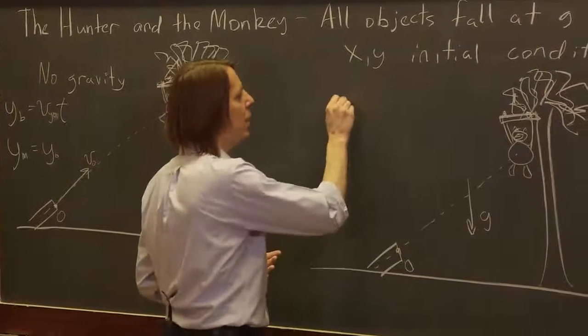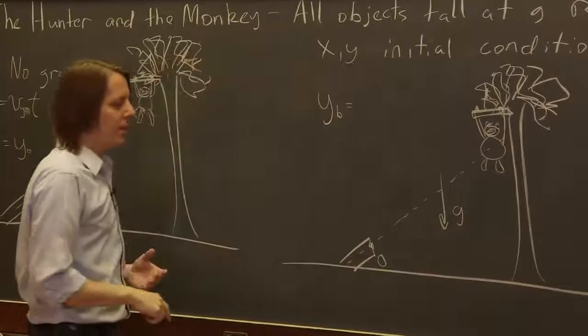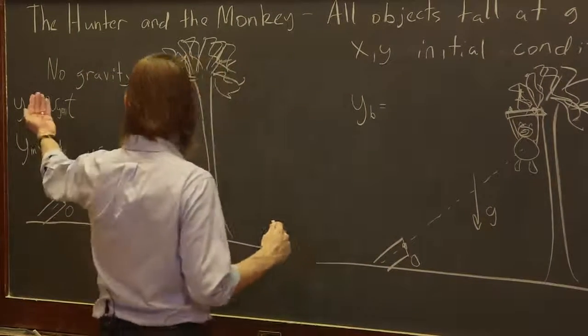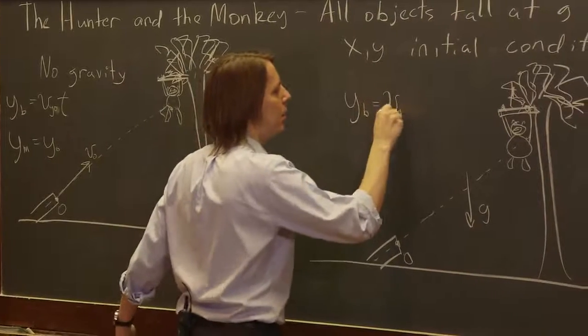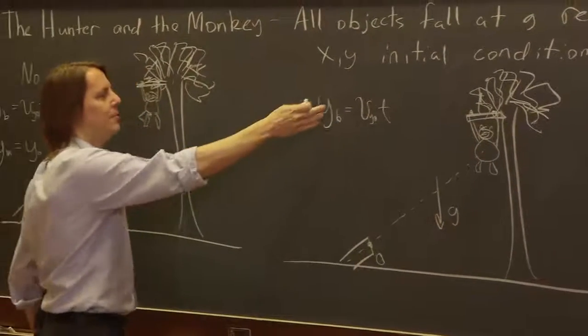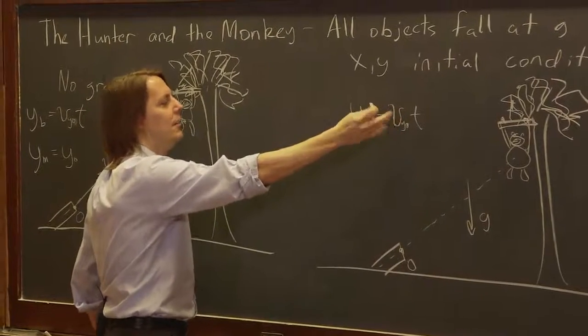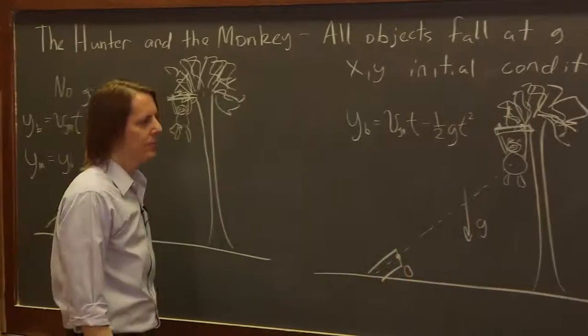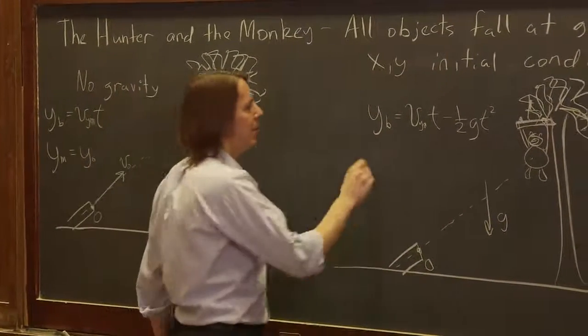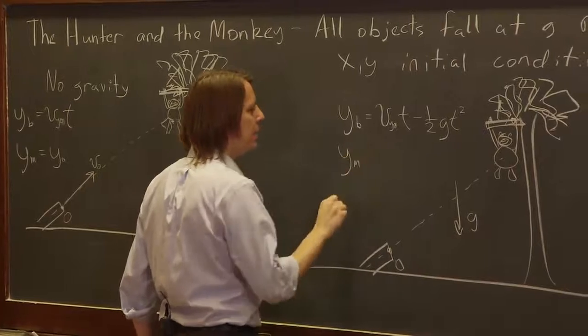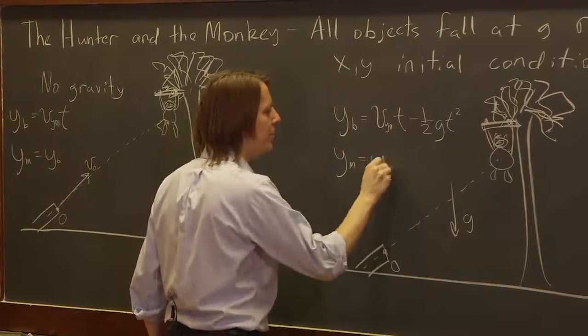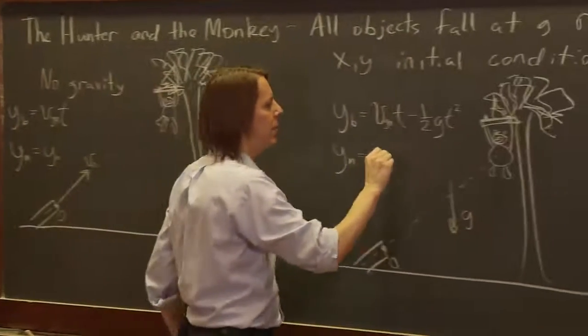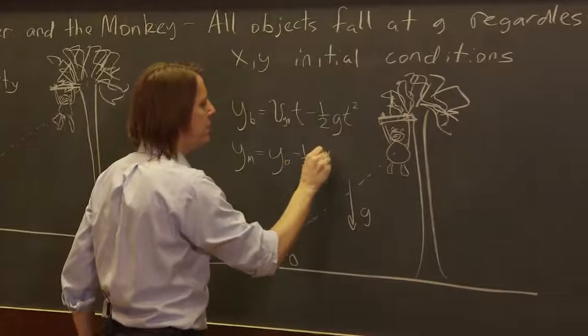So now in this case, let's think about the kinematics equations. The bullet, yb for y of the bullet, it starts at the origin, 0. And it's still going to have the same vy0. So the position will evolve in time as vy0 times t. But now it's going to fall at minus one-half g t squared. And what about the monkey? The monkey is ym. It started out at y0, that was the monkey's height. And before without gravity, it just stayed there. But now it's also going to fall at minus one-half g t squared.